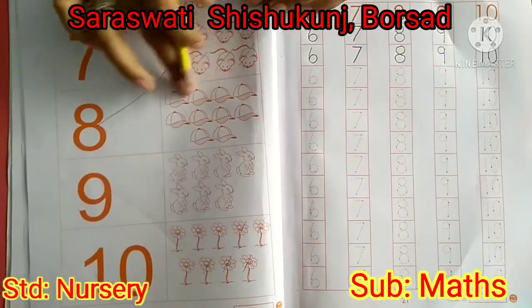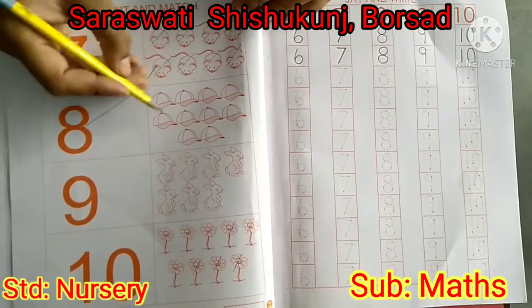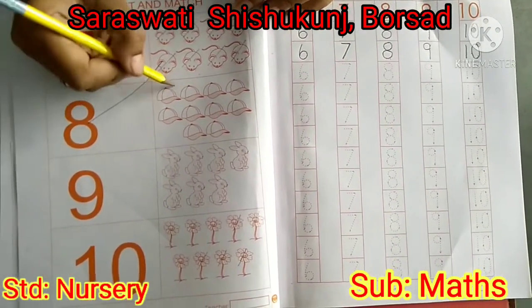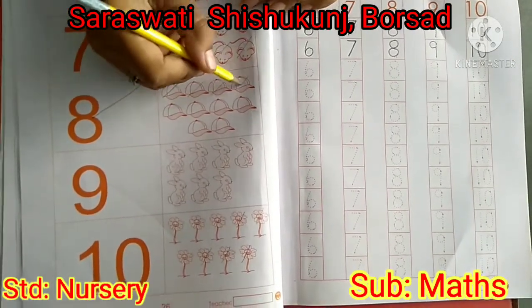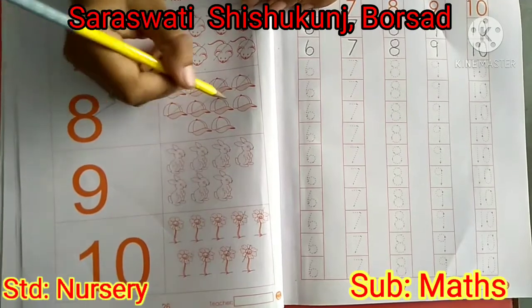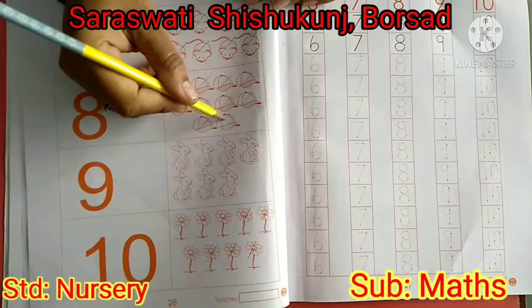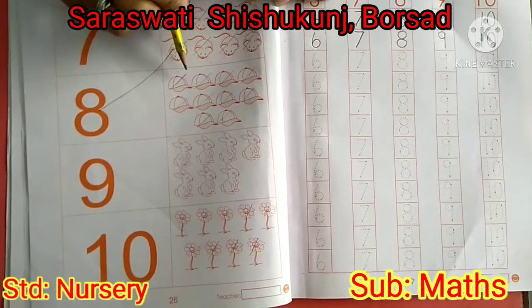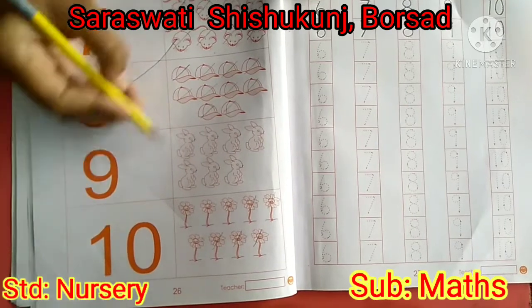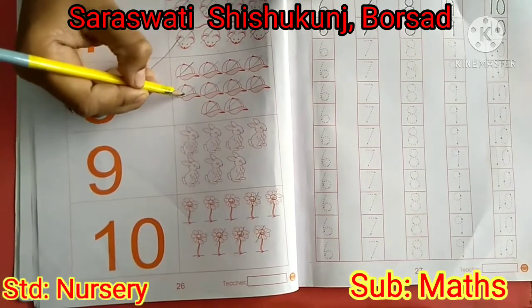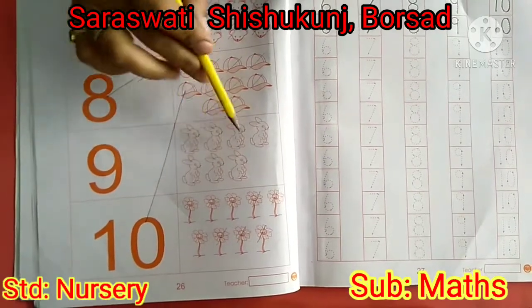And which picture is this? Yes, tabs. So count with me. 1, 2, 3, 4, 5, 6, 7, 8, 9, 10. How many? 10. Is this number 10? Yes. So match the number 10. And what are these? Yes, rabbits. So count with me. 1, 2, 3, 4, 5, 6, 7.